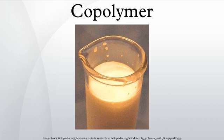Graft copolymers are a special type of branched copolymer in which the side chains are structurally distinct from the main chain. The illustration depicts a special case where the main chain and side chains are composed of distinct homopolymers. However, the individual chains of a graft copolymer may be homopolymers or copolymers. Note that different copolymer sequencing is sufficient to define a structural difference; thus an AB-diblock copolymer with AB alternating copolymer side chains is properly called a graft copolymer.